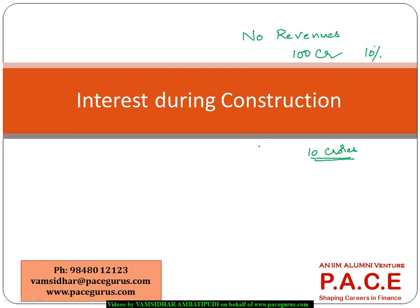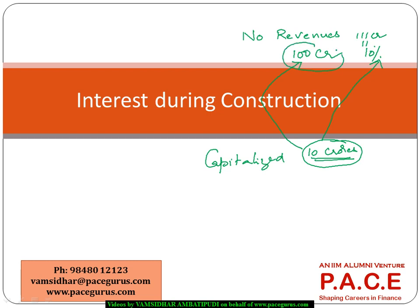This is what we call the interest during the construction period. Generally the mechanism involves capitalizing even that interest — meaning the loan amount includes this borrowing amount as well. So instead of borrowing 100 crores, I may borrow 111 crores, so that the 10 percent interest is also paid from this amount. The remaining 100 crores will be used for funding the project. That is the typical mechanism to handle interest during the construction period.